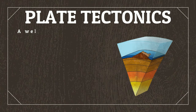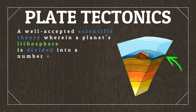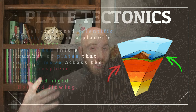This is where plate tectonics come in. Plate tectonics is a well-accepted scientific theory wherein a planet's lithosphere — that is its outermost layer — is divided into a number of plates that slowly move across the asthenosphere, the region of the planet's mantle immediately below the lithosphere. The lithosphere is cool and rigid, while the asthenosphere is hot and flowing. It is this difference in mechanical properties that causes the plates of the lithosphere to move. In short, a planet requires a cool surface but hot interior for plate tectonics to occur.